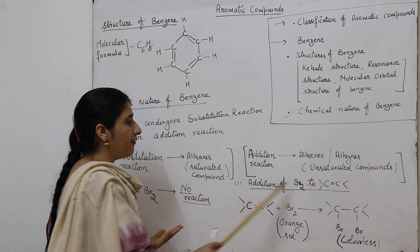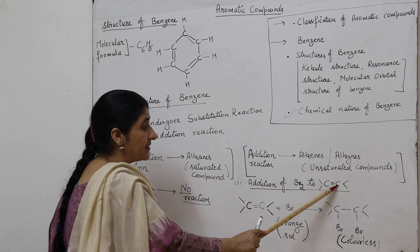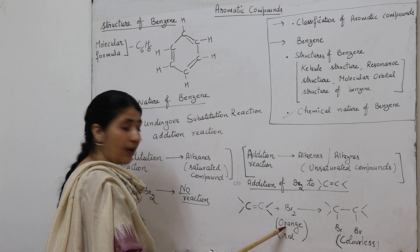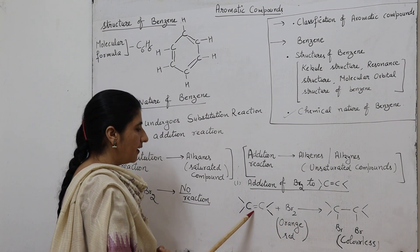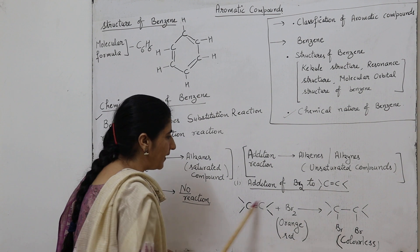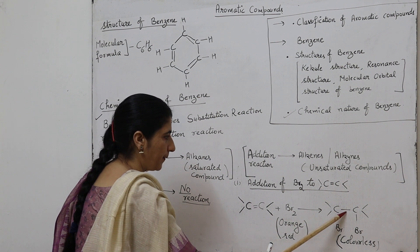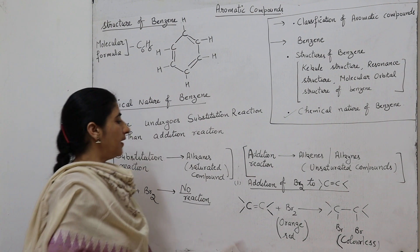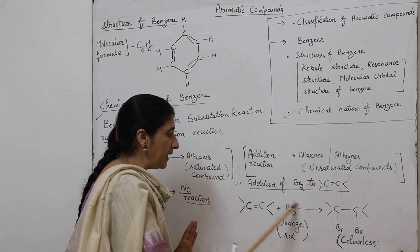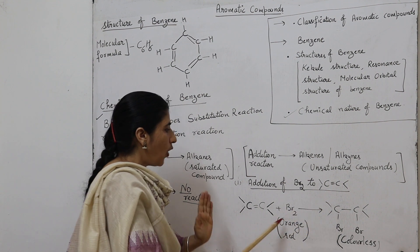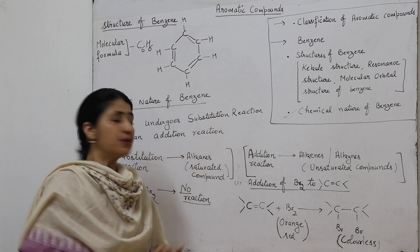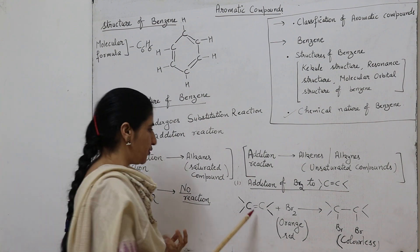For example, the addition of bromine to the carbon-carbon double bond in alkenes: when alkenes react with bromine, which has an orange-red color, one bromine is added to one carbon and the second bromine is added to the other carbon, and the double bond is converted to a single bond. When bromine reacts with alkenes, the orange-red color of the bromine is discharged — it is converted into a colorless compound. This reaction is used to test for unsaturated compounds.